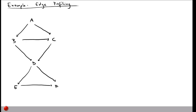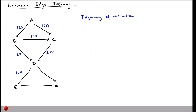Let's illustrate edge profiling with our running example. Here's the same control flow graph, and let's assume we have computed how often each edge is taken. Say the A→B edge has been executed 120 times, A→C 150 times — meaning the code reached A 270 times total. Then: B→C 100 times, B→D 20 times, C→D 250 times, D→E 160 times, D→F 110 times, and E→F 160 times.